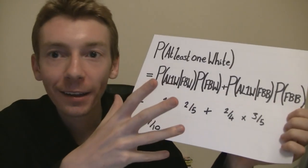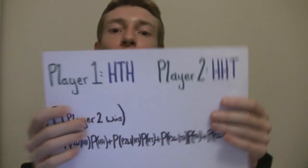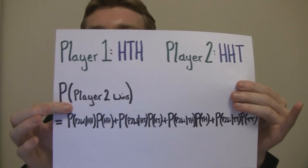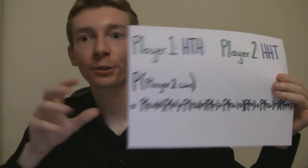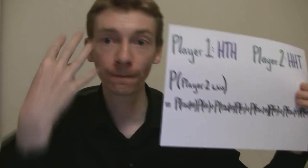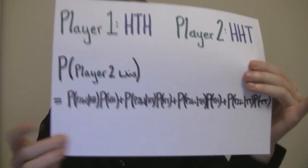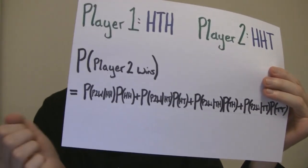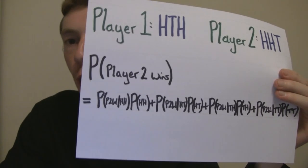That's one way to work out probabilities, and this is what we're going to use to work out the penny-ante game. Let's say player one picks heads, tails, heads, and player two picks heads, heads, tails. The probability that player two wins — we're going to use that rule of probability again, going through four scenarios. It is the probability that player two wins given the previous two coins were heads, heads, times the probability of heads, heads.